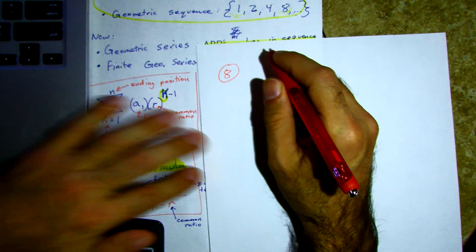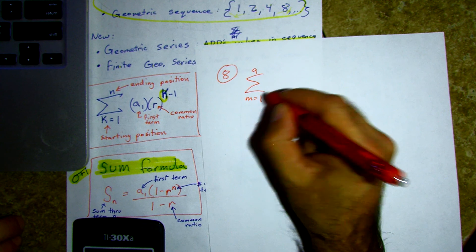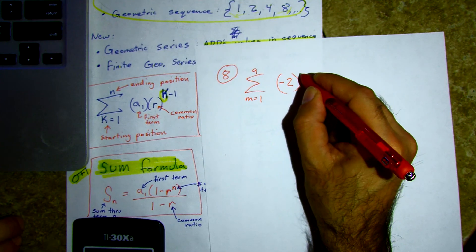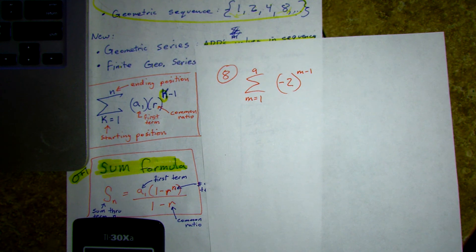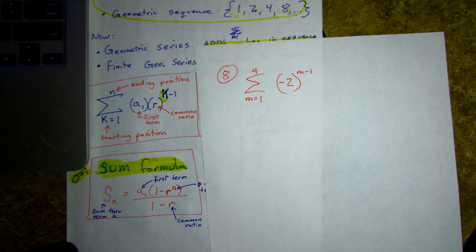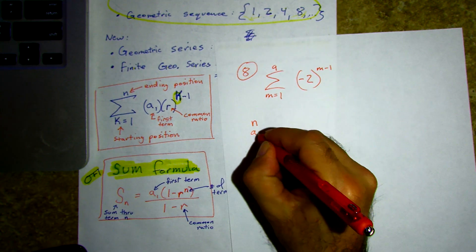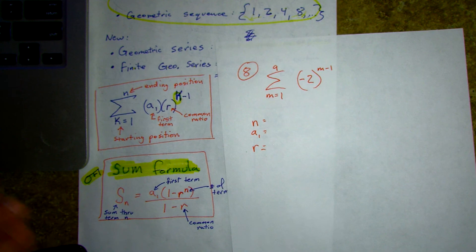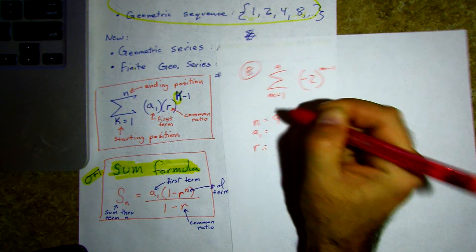We're done with 11, so we'll go to number 8. Number 8 has a summation symbol: m equals 1 to 9, of negative 2 raised to the m minus 1. They used m, we used k before — don't worry about it. Compared to our summation template, tell me in the chat: what's my n value? I need n, a sub 1, and r.